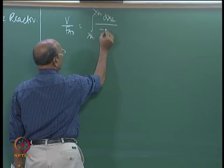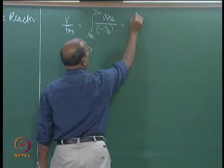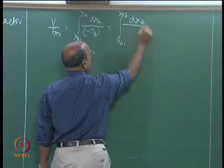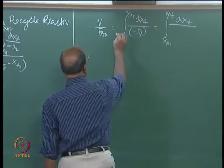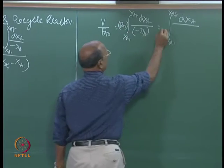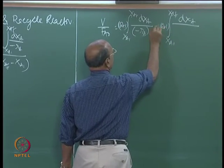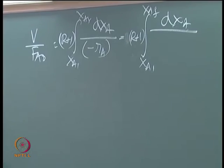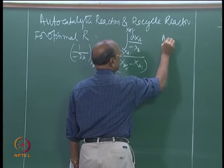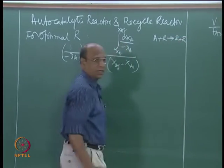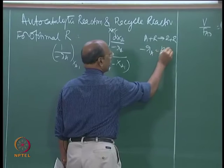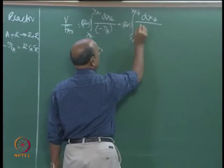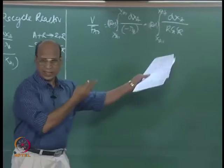This minus-rA — now depending on the scheme of the autocatalytic reaction, A plus R going to R plus R, the rate expression is K times CA times CR. That has to be substituted here.